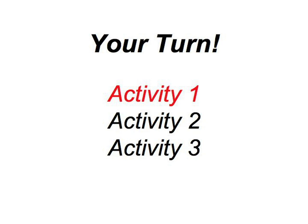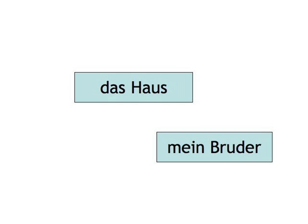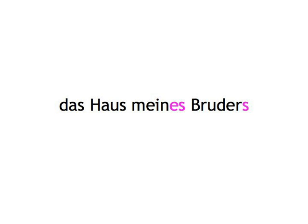In the first activity, we'll simply give you a pair of nouns with the first one owning or closely relating to the second. You express this relationship by using the genitive case. So if we say: Das Haus, Mein Bruder — you say: Das Haus meines Bruders. Let's start.